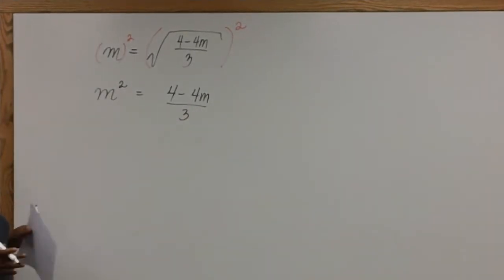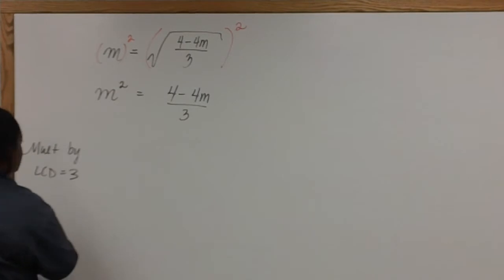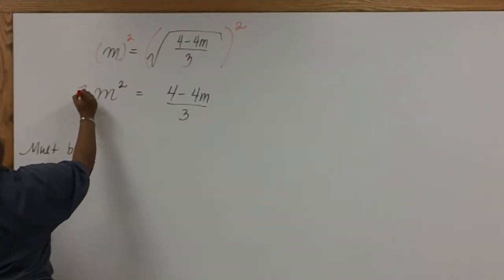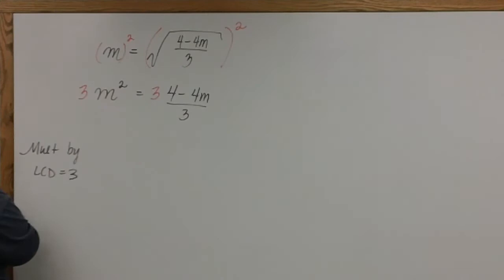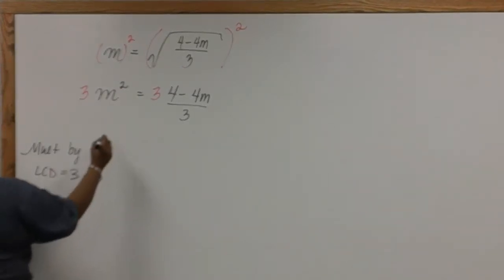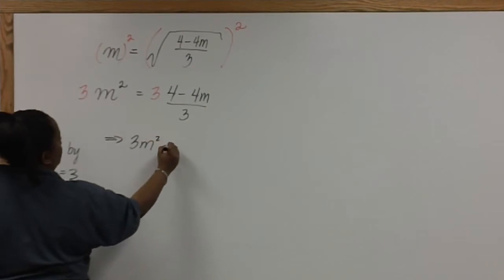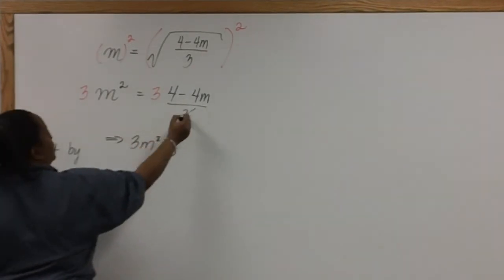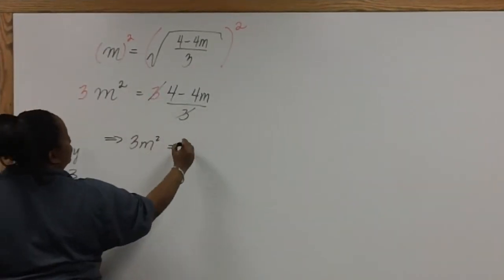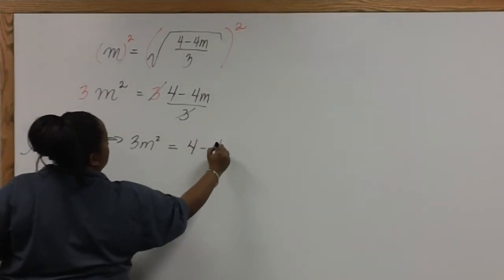Now to clear the fraction, you can either cross multiply or you can multiply by the LCD of 3. So I'll multiply both sides by the LCD of 3. And this leaves us with 3m squared. Here the 3's cancel equal to 4 minus 4m.